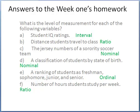B, distance students travel to the class. We use a ratio level of measurement. Why? Because for example, if the distance you traveled to the class is zero, that means you are in the class — the distance is zero. Zero here is meaningful.